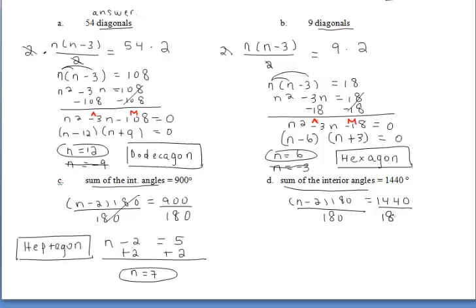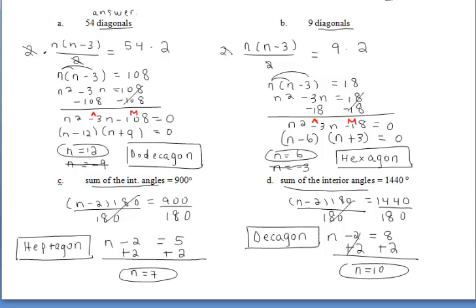For part d, you should have set your problem up like this. You could divide both sides of the equation by 180 and then eventually add 2. We get that n is 10 and don't forget we have to name that shape so it's a decagon.